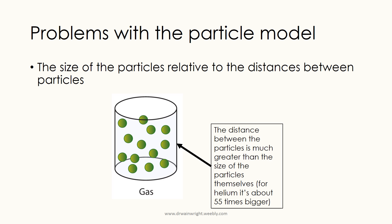The next problem with the particle model relates to the gas particle diagram specifically — the solid and liquid are okay in this respect. The gas diagram doesn't show the size of the particles relative to the distance between them. We're used to seeing the gas particles with small gaps between them, maybe one, two, or three particle-widths apart. But if you could actually see gas particles in real life, you'd see they're much further apart relative to their size.